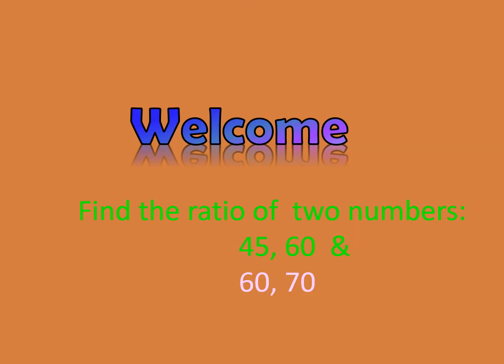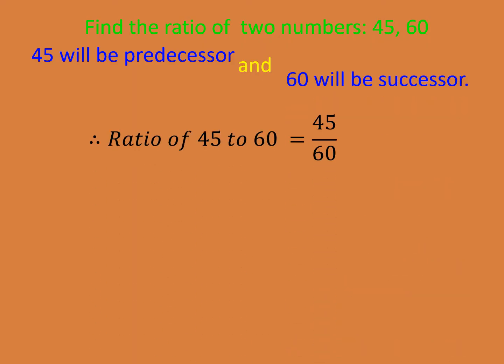Let us begin with the first one. To find the ratio of two numbers, 45 and 60, 45 will be the predecessor and 60 will be the successor. So we write them in ratio form as ratio of 45 to 60 equals 45 upon 60.